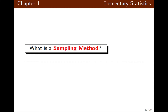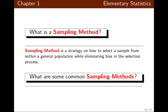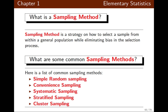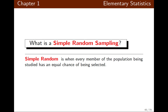How are we going to collect a sample? That brings us to sampling methods. A sampling method is a strategy for selecting a sample from within a general population. We don't want this process to be biased. Some common sampling methods are simple random sampling, convenience sampling, systematic sampling, stratified sampling, and cluster sampling. In simple random sampling, every member of the population has the same chance of being selected.